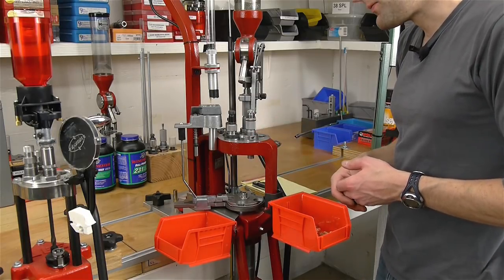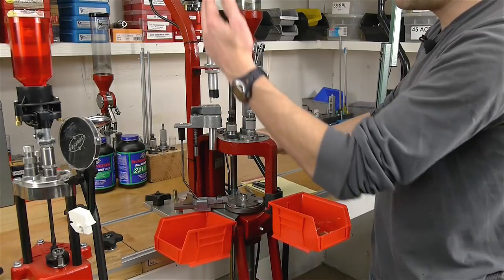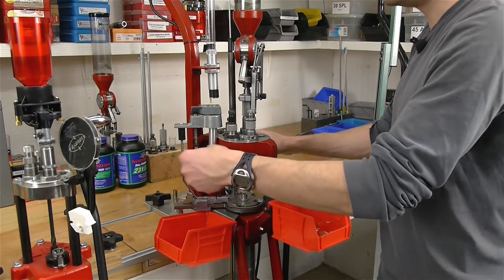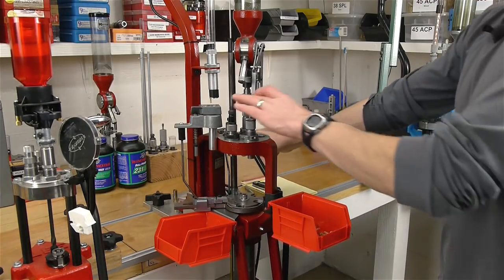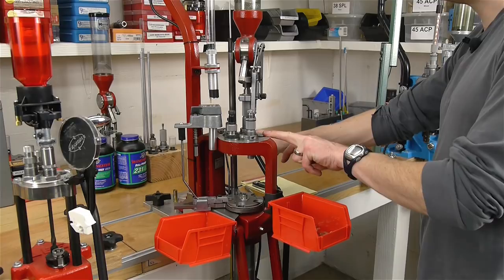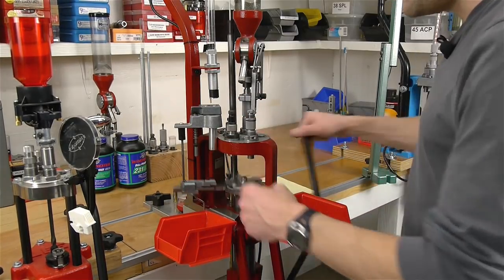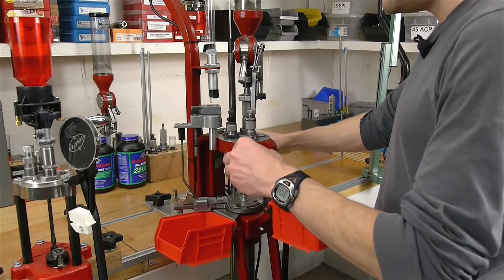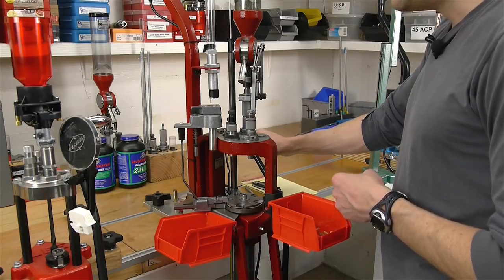Each time we pull the handle a piece of brass is inserted because we've got a case feeder here. You could also manually insert the brass. And then at the same time we're also sizing, we're charging, we could be checking powder level, we're seating and we're crimping. And then at the end of the stroke on the way down, boom, a completed cartridge is kicked off into the completed cartridge bin.